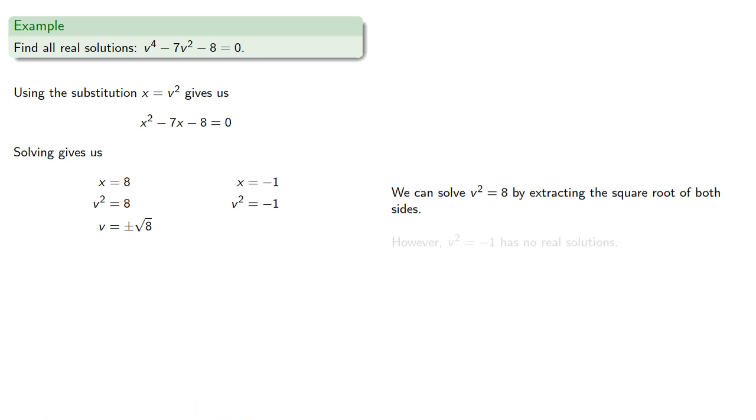However, v² = -1 has no real solutions, and so this doesn't give us a new set of solutions. Our only two solutions are ±√8.